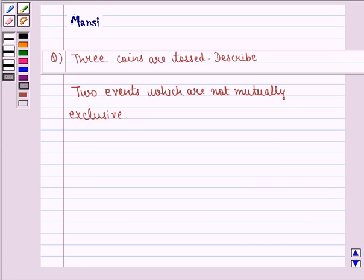Hello and welcome to the session. My name is Mansi and I am going to help you with the following question. The question says, 3 coins are tossed. Describe 2 events which are not mutually exclusive.